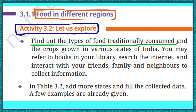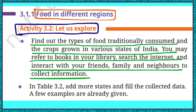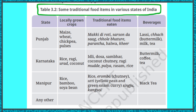Find out the types of food traditionally consumed and crops grown in various states of India. You may refer to books in your library, search the internet, and interact with friends, family, and neighbors to collect information. In Table 3.2, add more states and fill in the collected data — a few examples are already provided. The table shows: state name, locally grown crops, traditional food items eaten, and beverages.